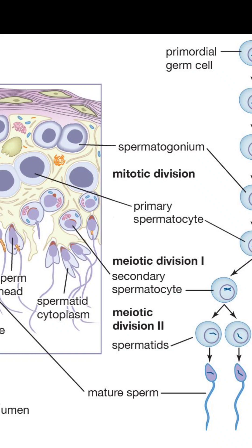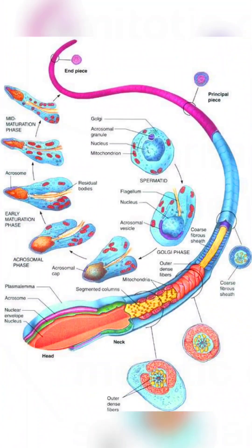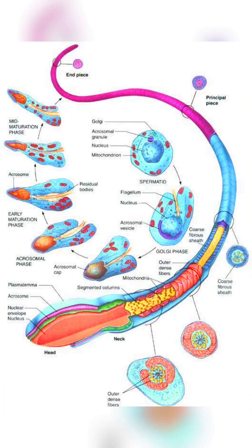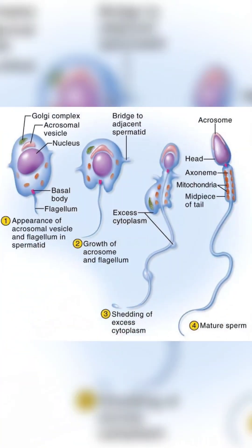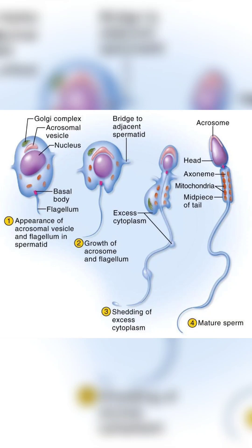On the other hand, spermiogenesis refers to the final stage of spermatogenesis where spermatids undergo structural changes and maturation to become fully functional spermatozoa.